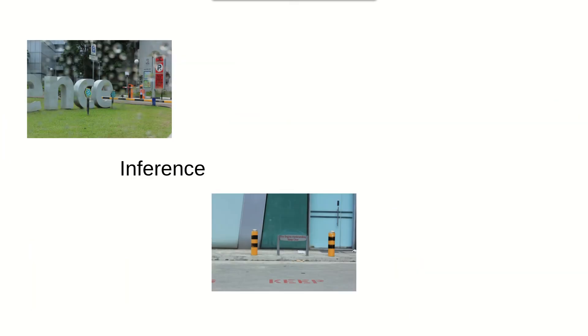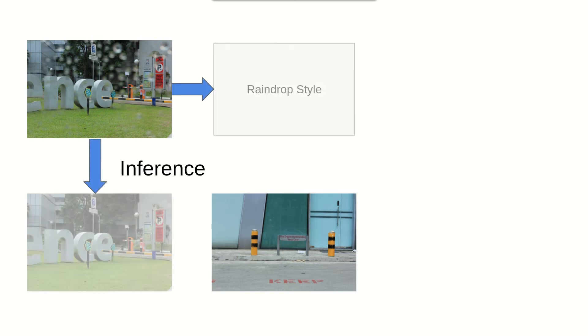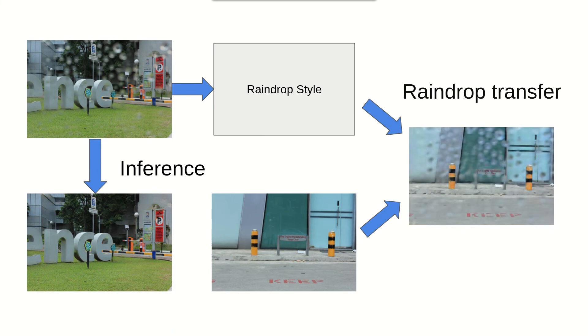During inference, we simply forward the image to the decomposition generator. The clean image and the rain drop style will be generated. We can also transfer the rain drop style to another clean image to create a new rain drop image.